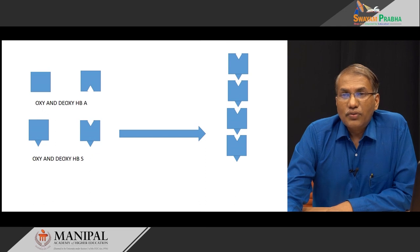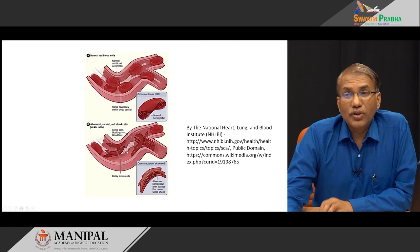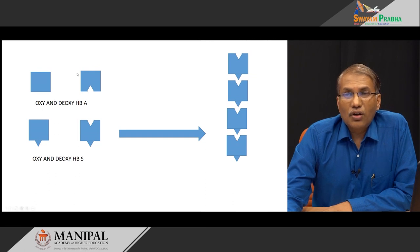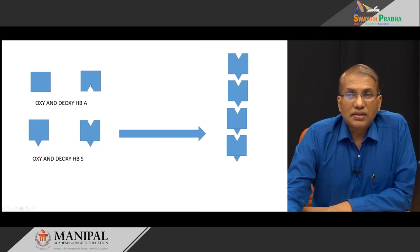Let us try to understand the microscopic structure and the phenomenon of fiber-like formation in sickle cell hemoglobin. This is a diagrammatic representation of how the fiber-like structure forms inside the RBC. In oxygenated and deoxygenated normal hemoglobin, at no point do the oxygenated and deoxygenated states have structures complementary to each other, so there is no chance they will form aggregation. This is the normal condition.